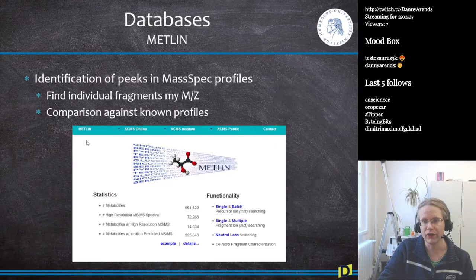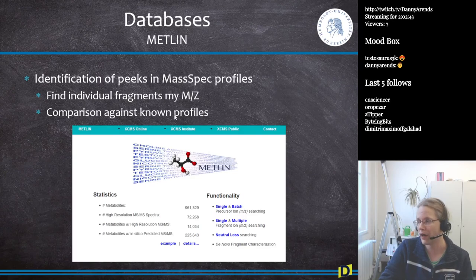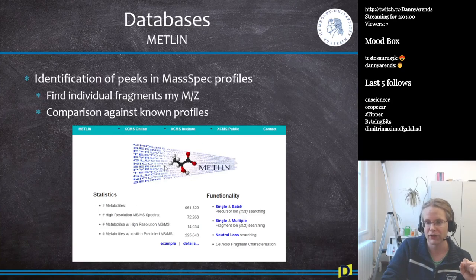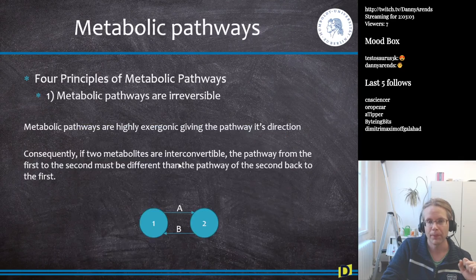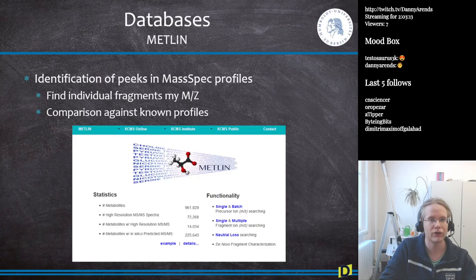To use METLIN, you find individual fragments, look up the mass-over-charge ratio for each, and compare against known profiles in the database. For example, if you suspect a substance is cocaine, you can compare your spectrum to the cocaine spectrum, or search individual component masses against all entries in METLIN. The screenshot shown here is of the older interface.